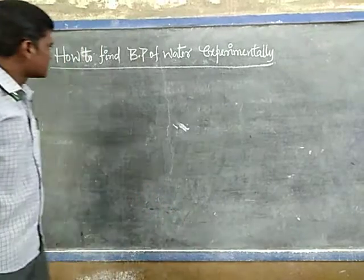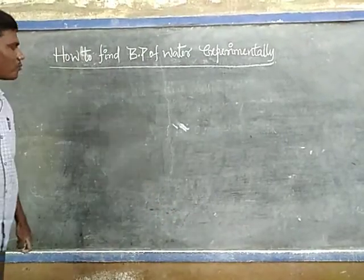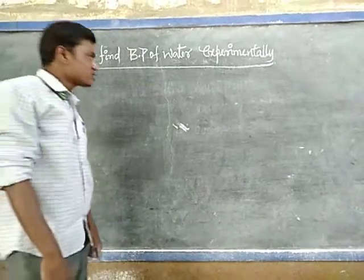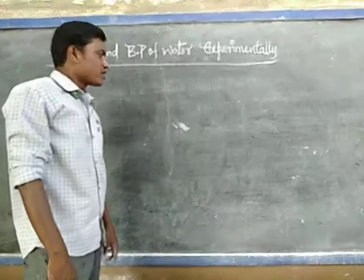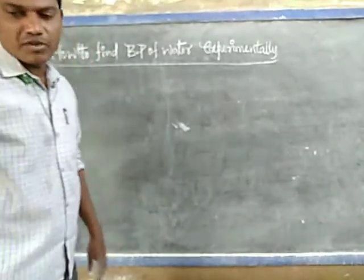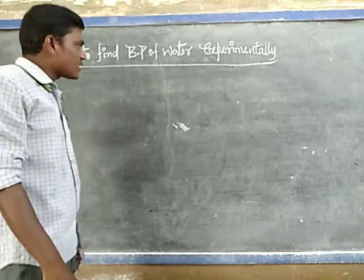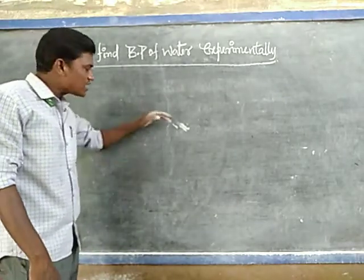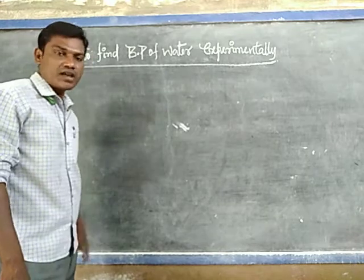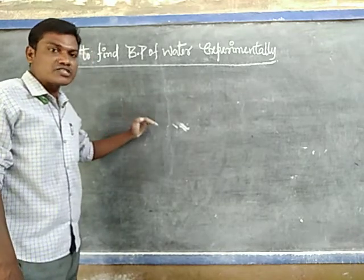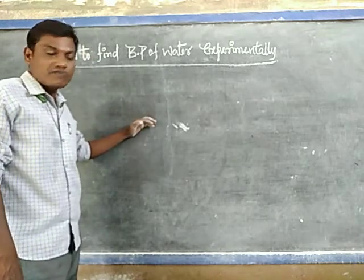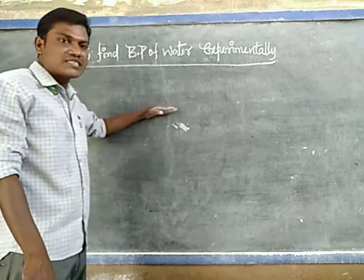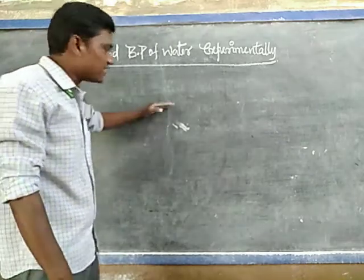Next, our topic is how to find the boiling point of water experimentally. First, I will draw a diagram. After the diagram, we will cover what materials are required to conduct this experiment, what is the procedure, what is the conclusion we are observing, and we will discuss it step by step.